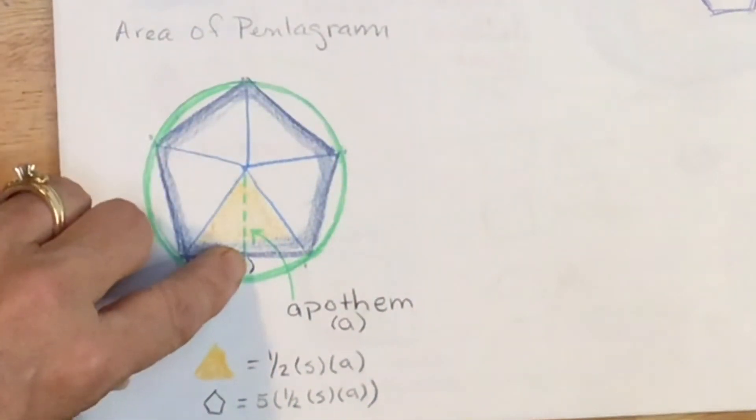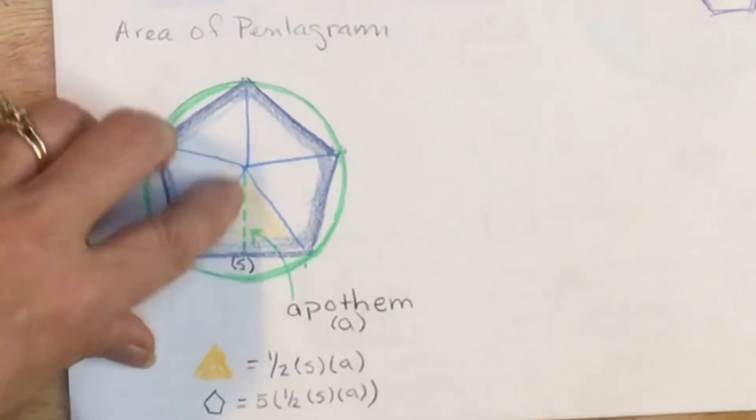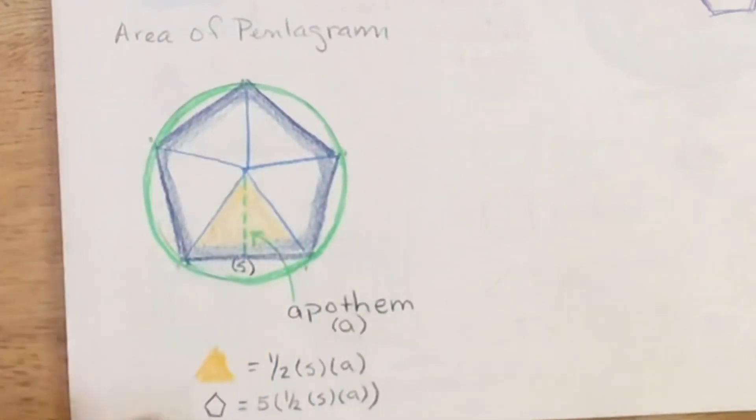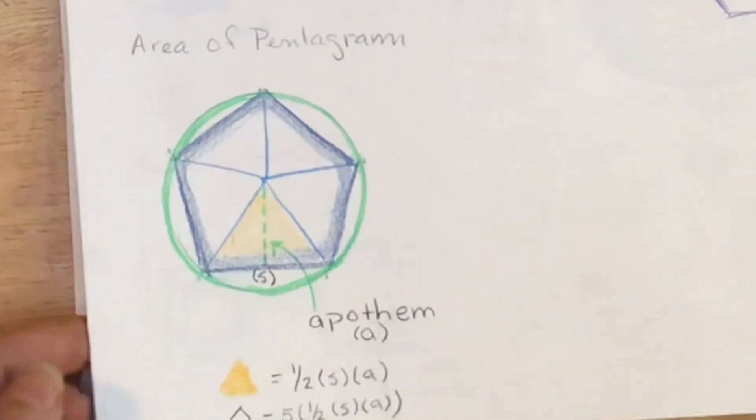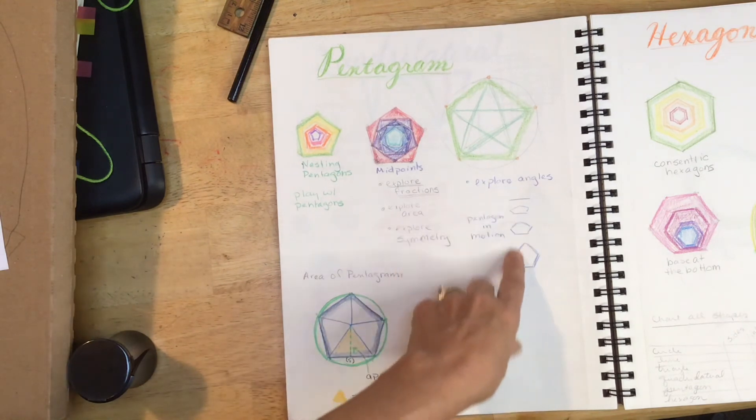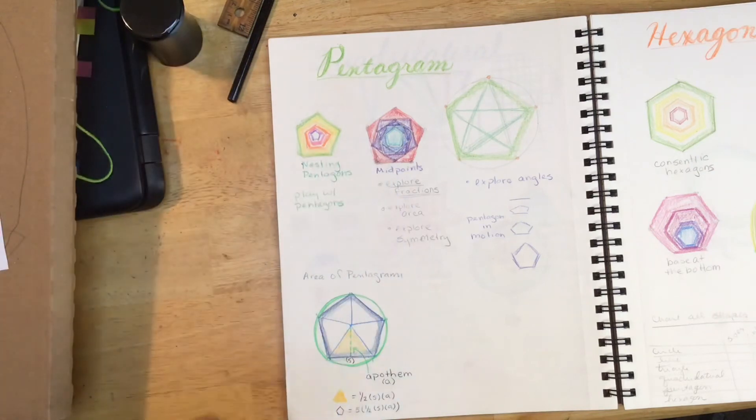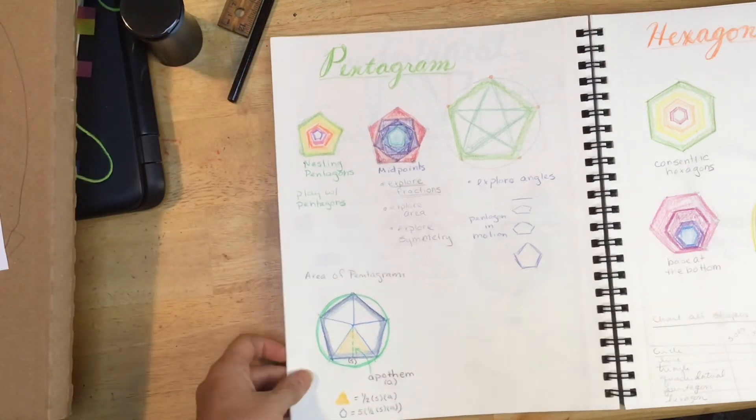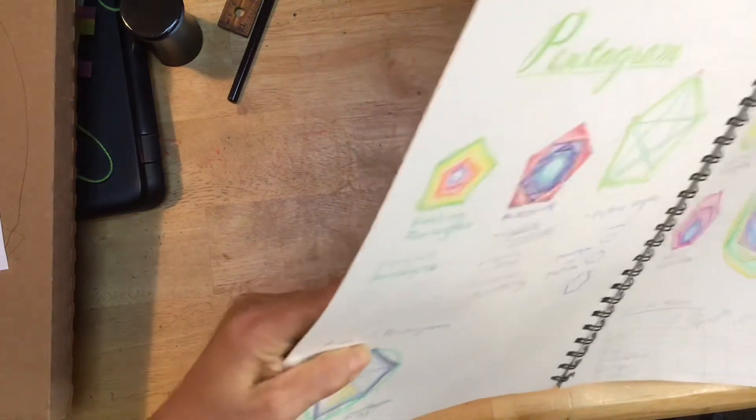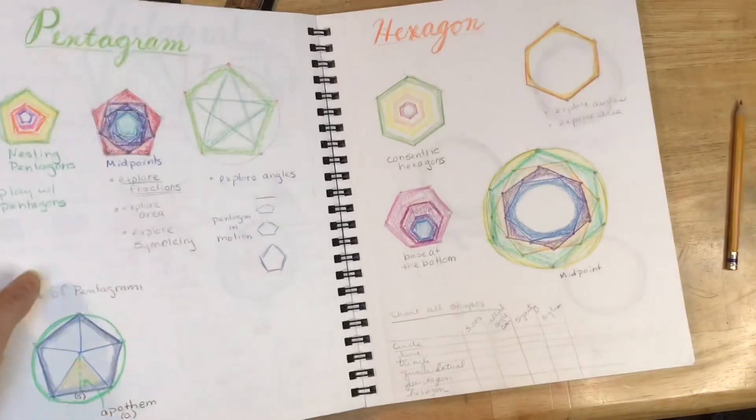And that will also introduce us to the term apothem, which I found in my research in deriving areas for various regular polygons. We will also explore the pentagon in motion. We will look at the internal angles. But like I said before, the amount that we do for the pentagon will be less, and it becomes even less as we move up into more complicated shapes.